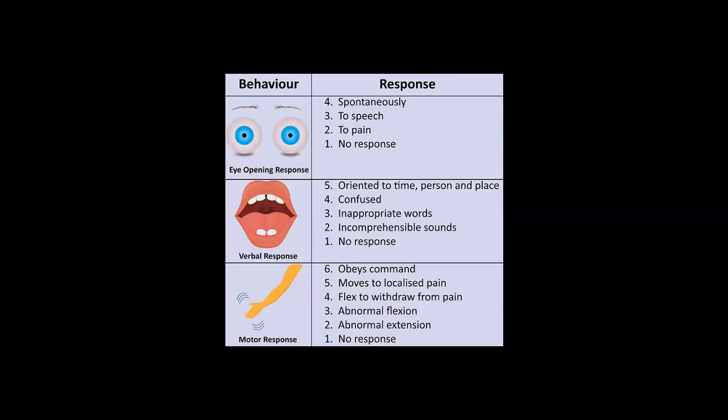Next, we give a verbal response score. We give the patient up to 5 numbers. If the patient is oriented to time, place, and person — for example, they know their name and can tell the correct time — you give 5. If the patient is confused and answers incorrectly, like saying it is 2 o'clock when it is 12 or 1, you give 4.